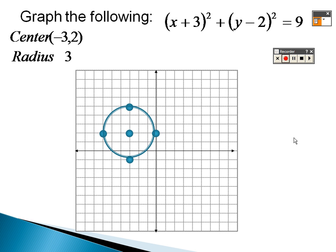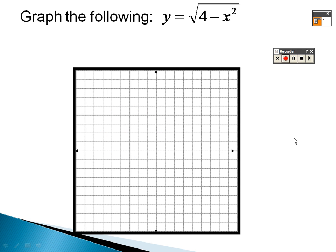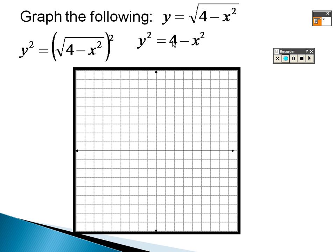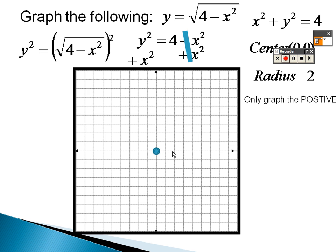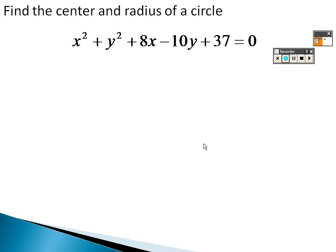To graph y equals the square root of (4 minus x²), square both sides to eliminate the root, giving y² equals 4 minus x². Move x² to the other side: x² plus y² equals 4. Center is (0, 0) and radius is 2. But since it was a positive square root, only the top half of the circle is graphed.